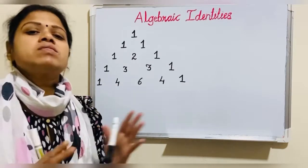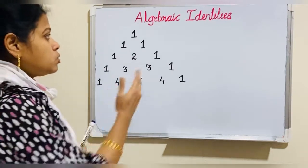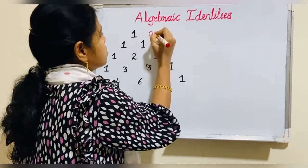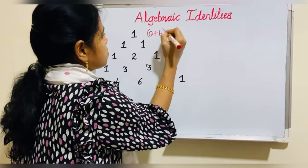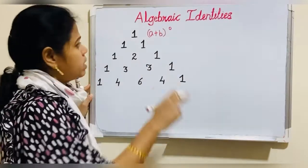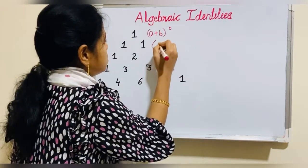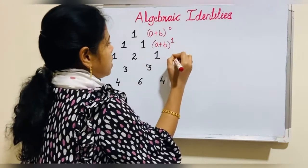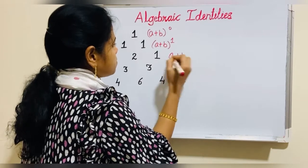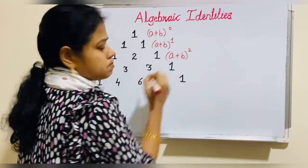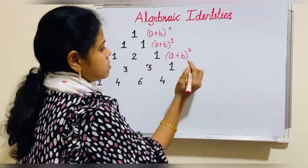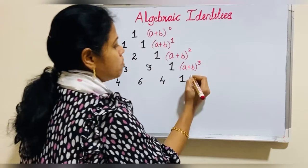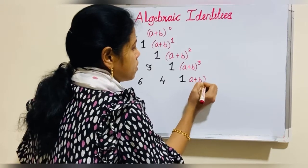Now, how to write the algebraic identities with the help of Pascal's Triangle. Take the first row as (a+b)⁰ — anything to the power 0 is 1. Next is (a+b)¹, then a plus b. The next row belongs to (a+b)², the next row belongs to (a+b)³, and the next row belongs to (a+b)⁴.